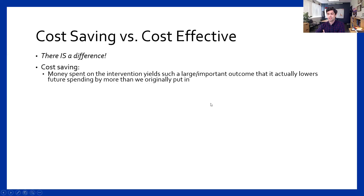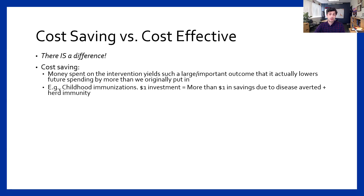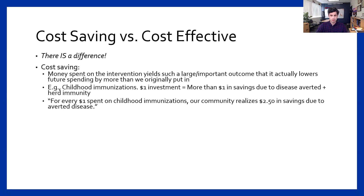There is a difference between cost-saving and cost-effective. Cost-saving is when we spend a dollar and save more than a dollar — we save so much that we actually recoup more than we originally invested. Childhood immunizations are an easy example: for every dollar we spend, we get more than one dollar in savings due to disease averted, herd immunity, school closures, and so on. This is illustrative — don't take this number to the legislature and say Max said this — but roughly, for every dollar spent on childhood immunizations, our community realizes $2.50 in savings due to averted disease.